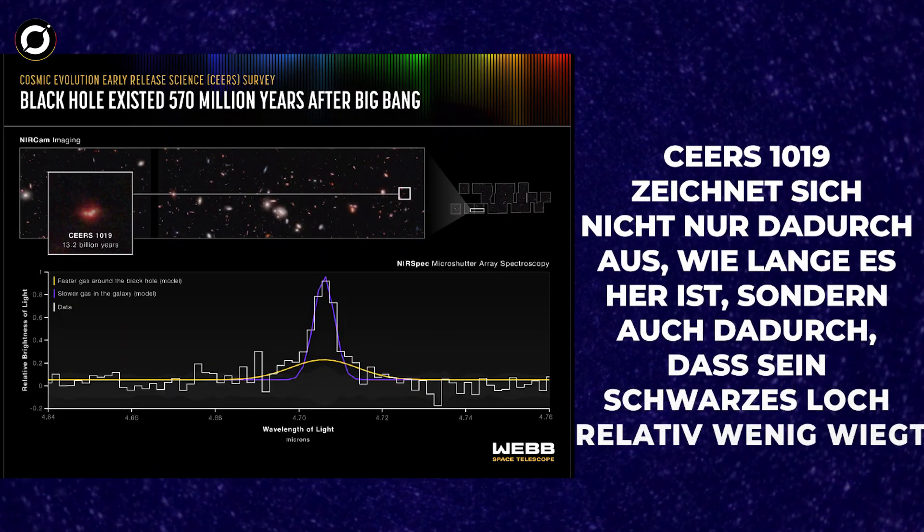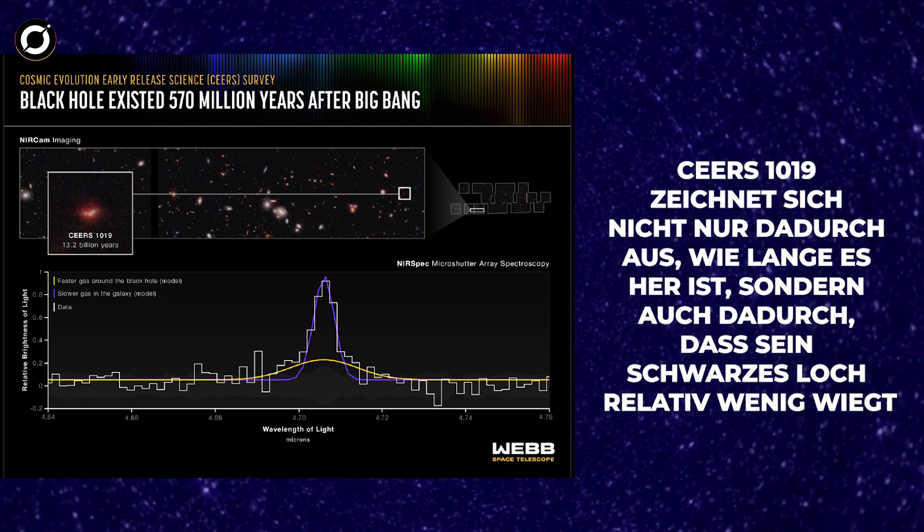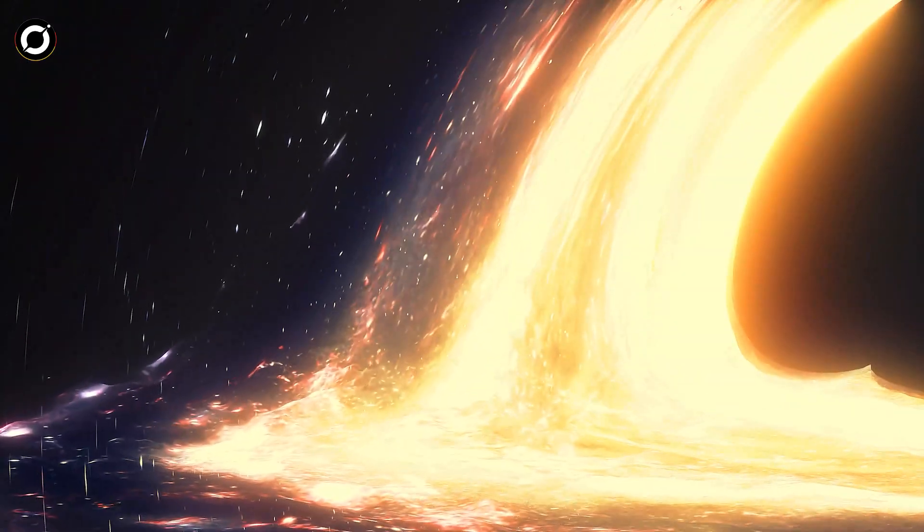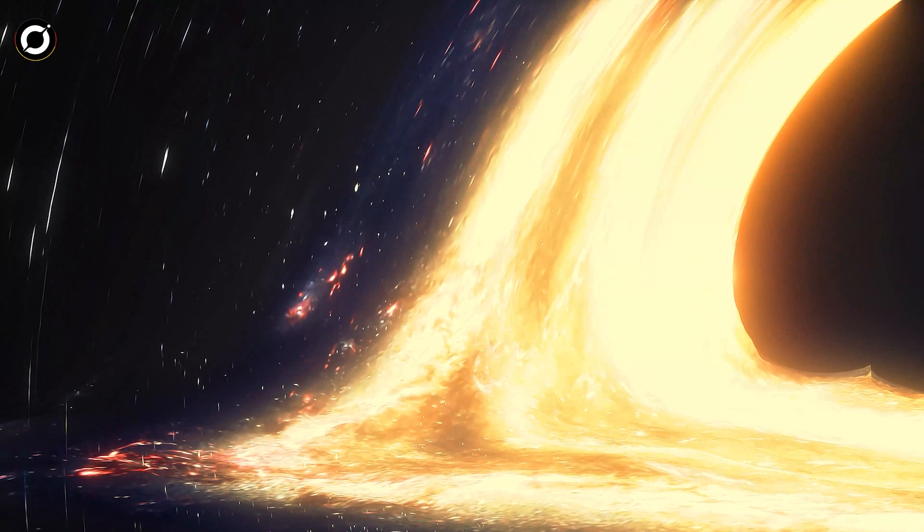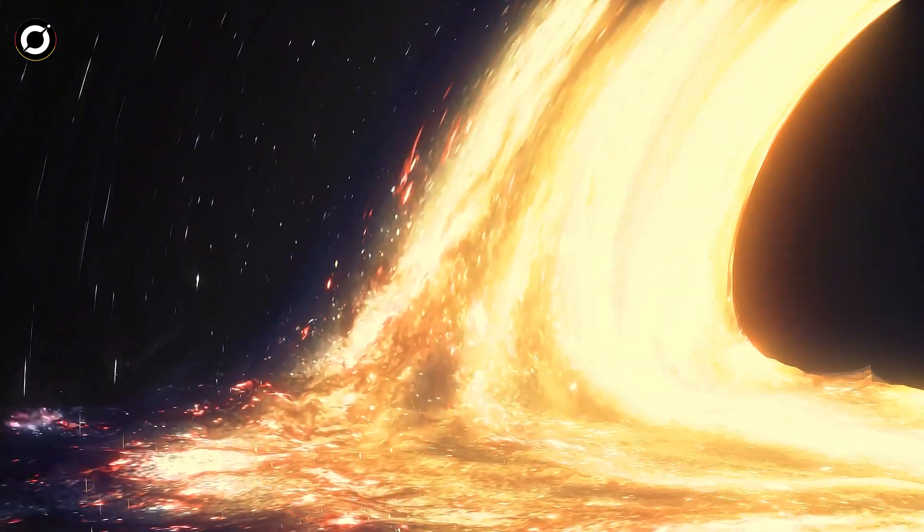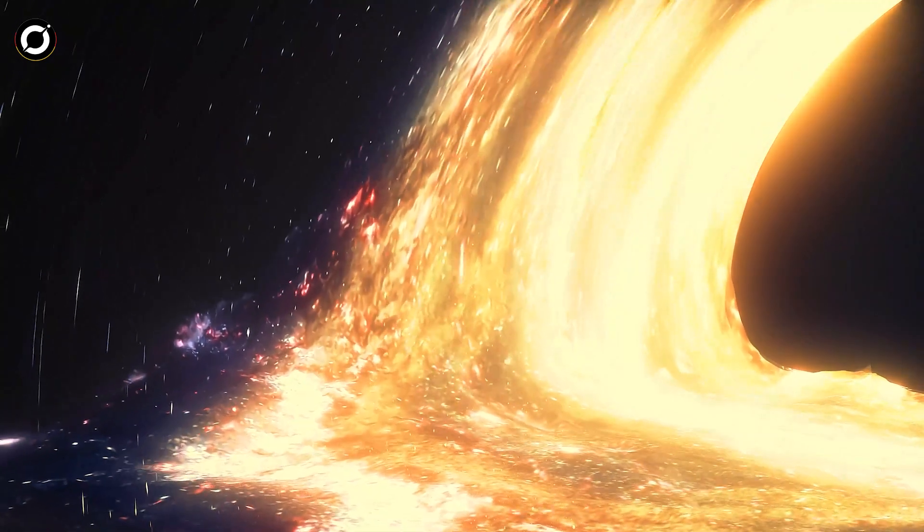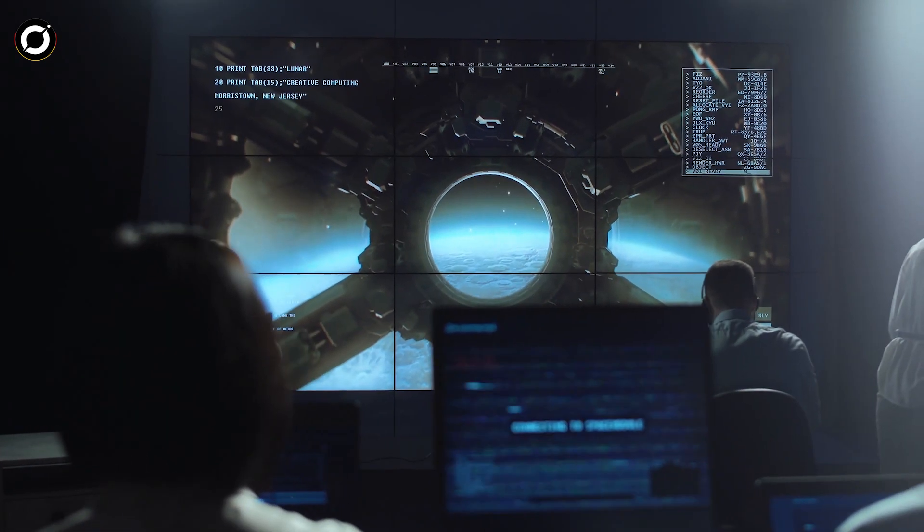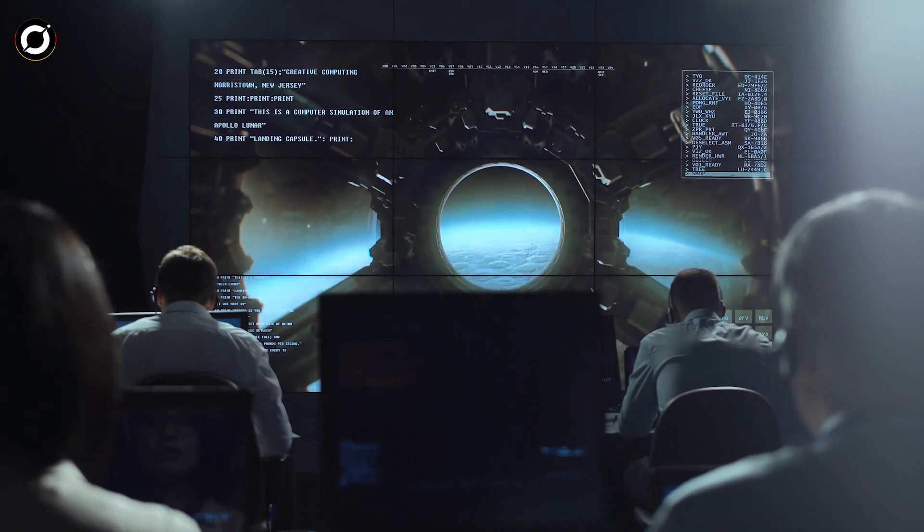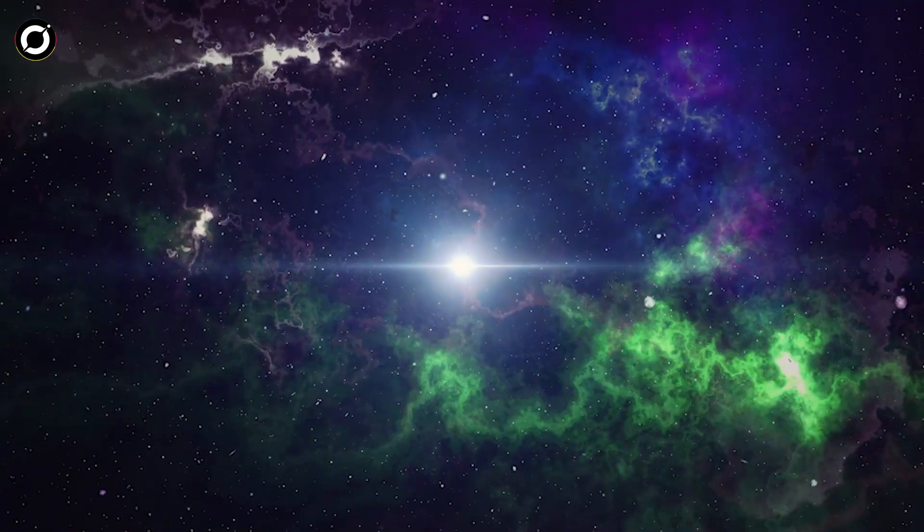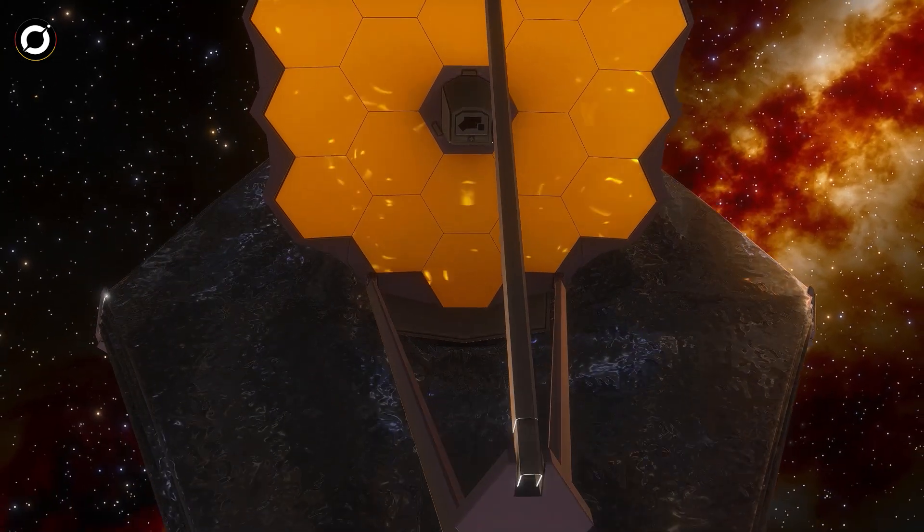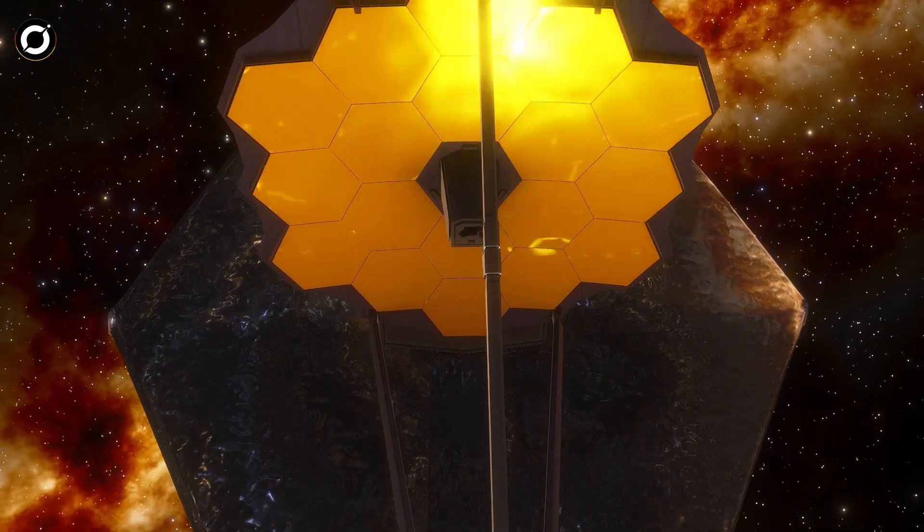CERS 1019 zeichnet sich nicht nur dadurch aus, wie lange es her ist, sondern auch dadurch, dass sein schwarzes Loch relativ wenig wiegt. Es wiegt neun Millionen Mal mehr als die Sonne, was viel ist, aber nicht im Vergleich zu den Riesen, die man oft im Zentrum von Galaxien im jungen Universum findet, die eine Milliarde Mal oder mehr schwerer sind. Darüber hinaus wissen Astronomen noch nicht, wie ein so mächtiges Objekt überhaupt existiert. Es erschien schon so früh im Universum, als sich die ersten Galaxien bildeten. Mit Hilfe des Webb-Teleskops hoffen Forscher zu verstehen, wie eine so große Galaxie und andere massereiche Objekte entstanden sind.